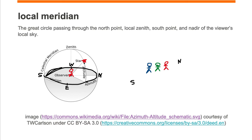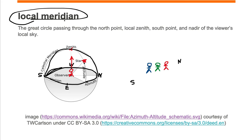The zenith is directly above the viewer's head. The viewer points up to the sky, finds the zenith, then traces out their local meridian, which goes from their north point through their zenith, down through their south point and through nadir, completing the great circle. This is what we mean by the local meridian — the line that passes through the north point, the zenith, and the south point of their observable sky.